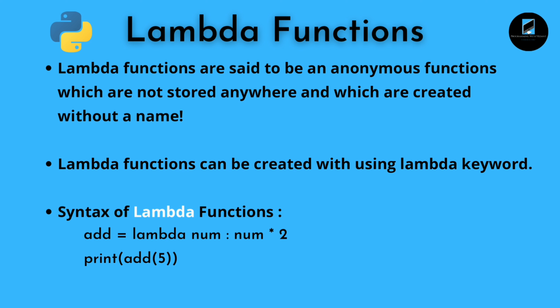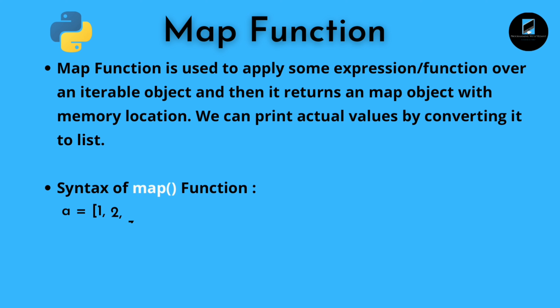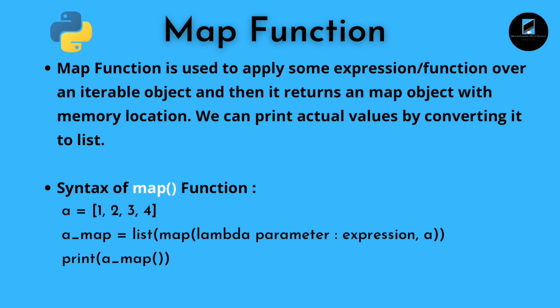The syntax of lambda functions: 'add = lambda num: num * 2'. Here the first 'num' is a parameter and 'num * 2' is the expression. We have stored it in 'add' just for an example, but when we use lambda functions in map or filter functions, we don't store them anywhere. The map function is used to apply some expression or function over an iterable object and it returns a map object with a memory location.